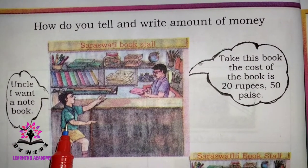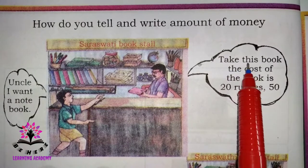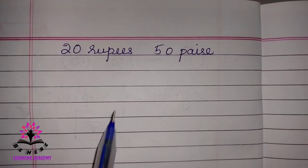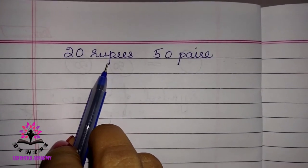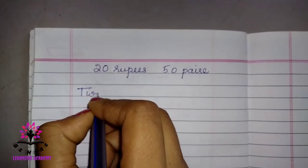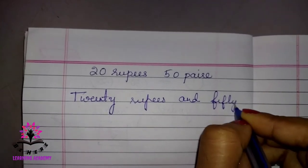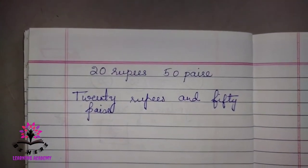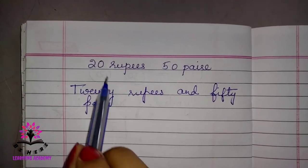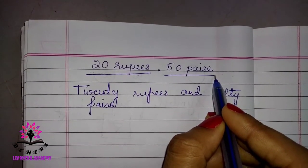This boy goes to a shop and purchases a notebook. The shopkeeper says the cost of the book is 20 rupees 50 paisa. So how do we write this in numbers? First write the rupee part, then put a dot, then write the paisa, and denote it with the symbol of rupees.